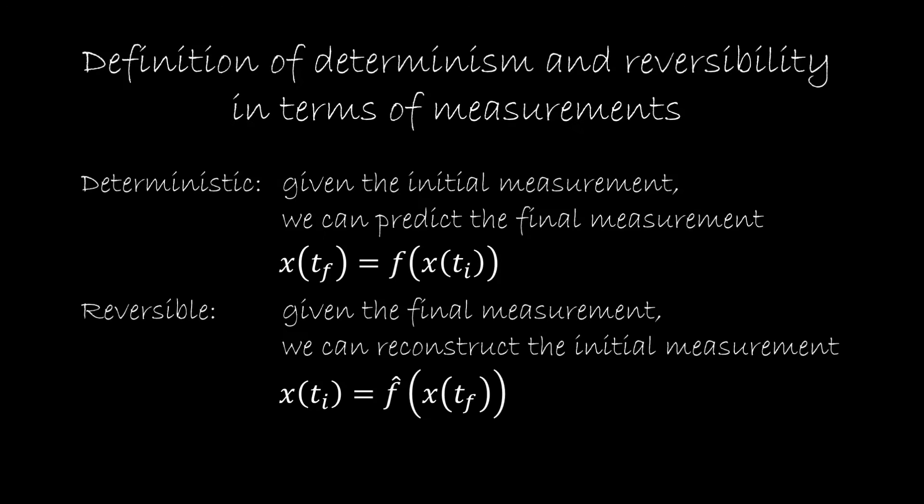In this part we're going to look at how Hamiltonian mechanics relate to measurements. We've seen that part of it is equivalent to saying that future states are a function of previous states, and that makes us think about determinants. So we want to understand how determinants and reversibility work in the context of measurement.